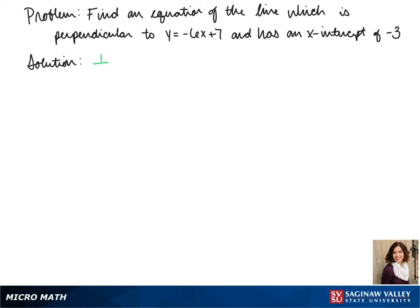So first we'll look at the slope of the line which is perpendicular to our line. That's negative 6. So ours must be the opposite reciprocal. Our slope is 1 over 6.